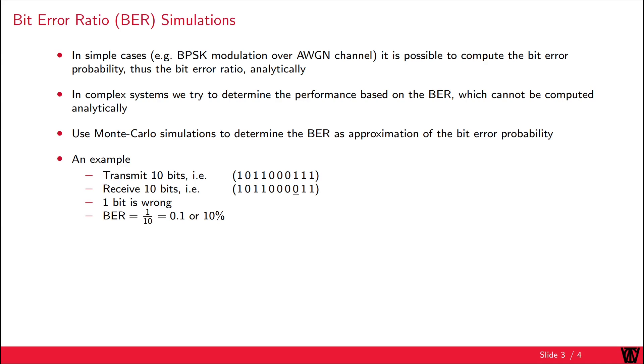We get a BER of 0.1 or 10%. For the BPSK modulated signal over an AWGN channel, the bit error ratio can be calculated as 1/2 times the error function of the square root of the SNR.